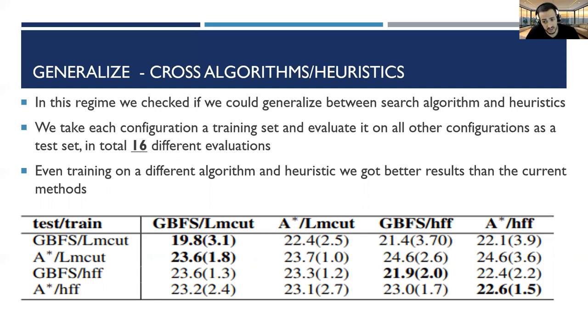More interestingly, we found that even if we train on one domain and test it on other configurations, we still get better results than the current methods. From the results, we understand the network is learning something more general and not the specific behavior of the planner.